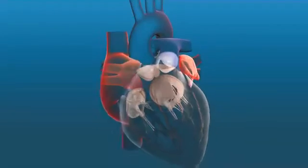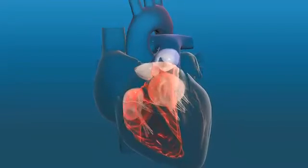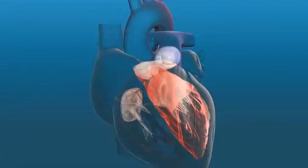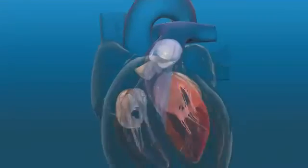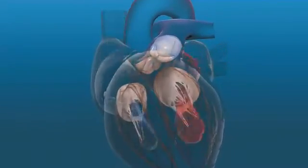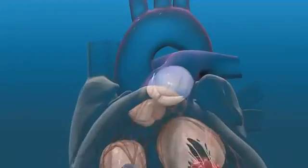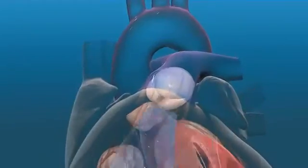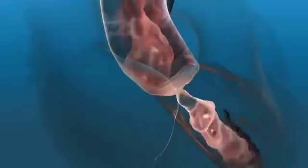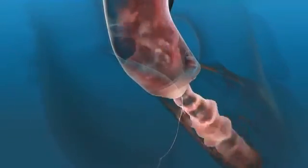The right and left atria connect to their respective ventricles. The right ventricle connects to the pulmonary artery, and the left ventricle to the aorta. Valves are located at these connections to ensure that blood moves in only one direction. The parts of a valve that open and close are flaps of tissue called cusps. The aortic valve is located between the left ventricle and the aorta.